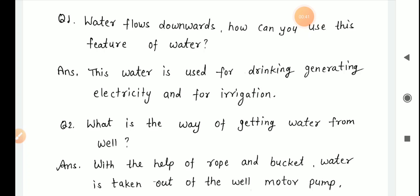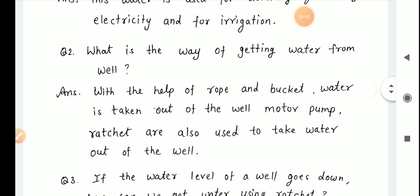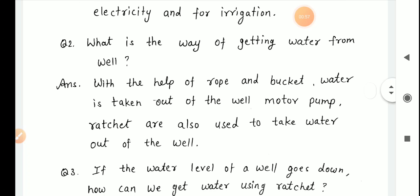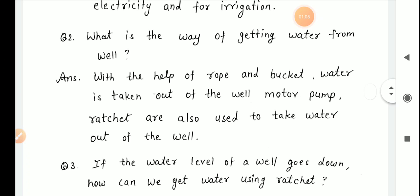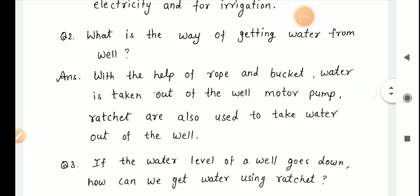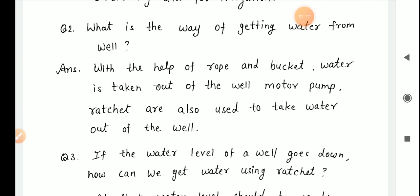What is the way of getting water from well? With the help of rope and bucket, water is taken out of the well. Motor pumps and ratchets are also used to take water out of the well.